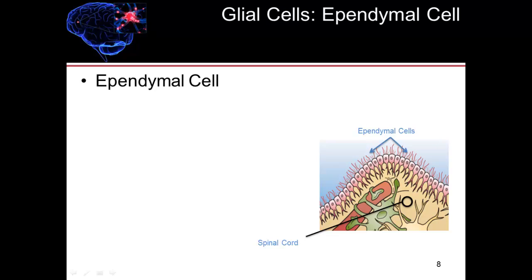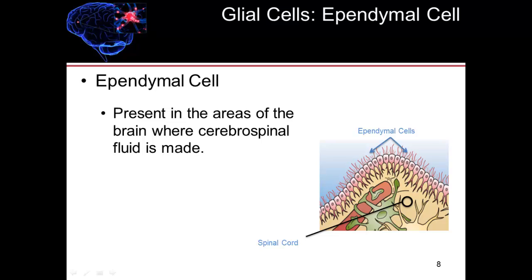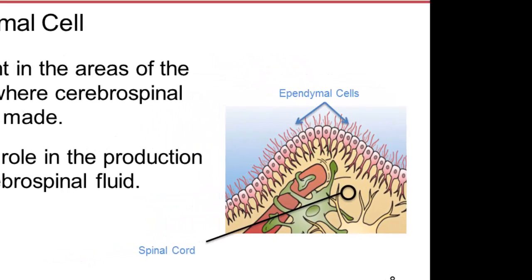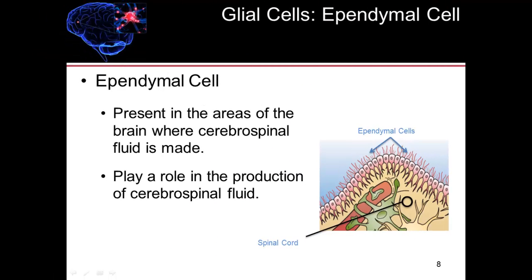The ependymal cell is the last type of glial cell we're going to talk about. It is present in areas of the brain where cerebrospinal fluid is made. Those areas are referred to as the ventricles — we have a lateral ventricle, a third ventricle, and a fourth ventricle. They are spaces within the brain where cerebrospinal fluid is made, and therefore ependymal cells play a role in the production of that fluid.